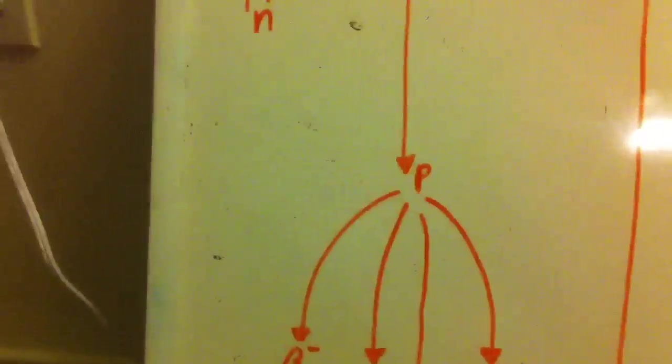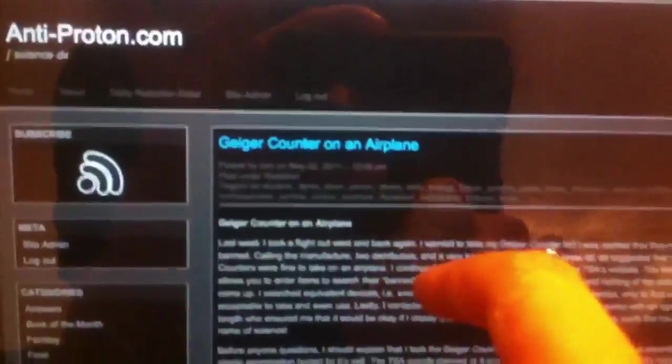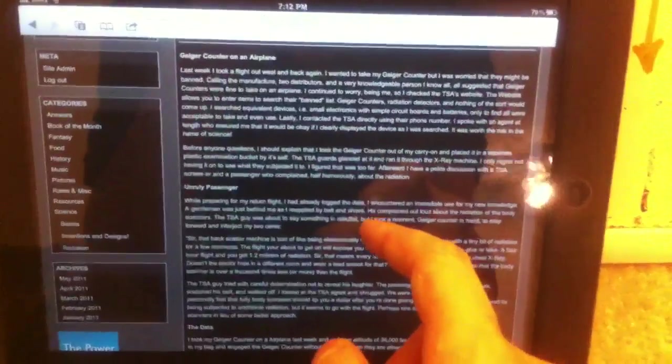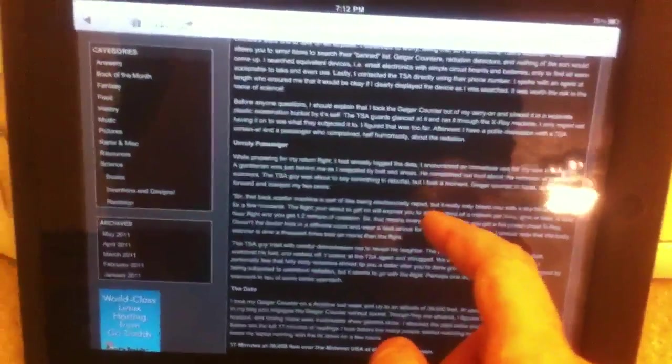If you go to my website, anti-proton.com, you'll see I have some information about taking a Geiger counter on an airplane. I did this perfectly legally. In fact, I called the TSA first to make sure that it was legal, and they said that it was. So, if they come back and say they have a problem with that, then I don't know what to tell them. I emailed them. I called them. I checked. They said everything was fine.